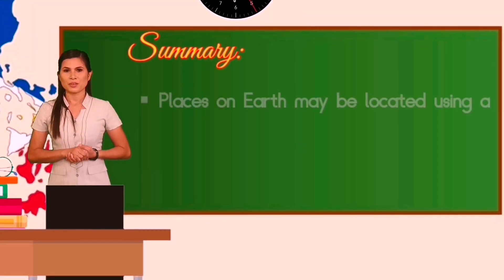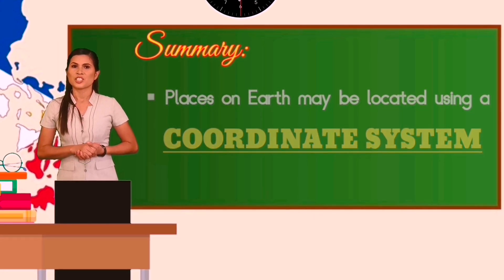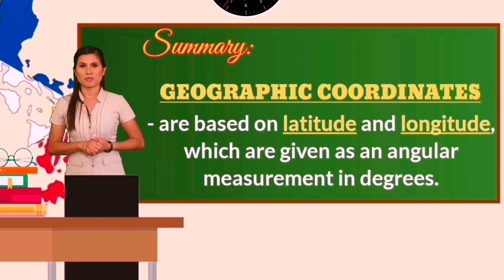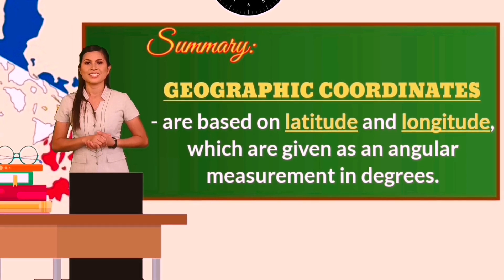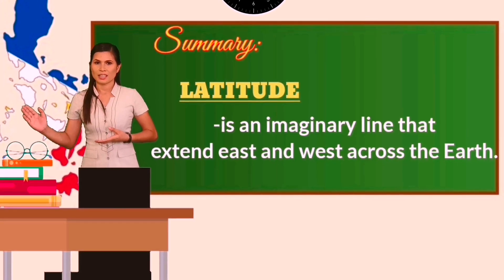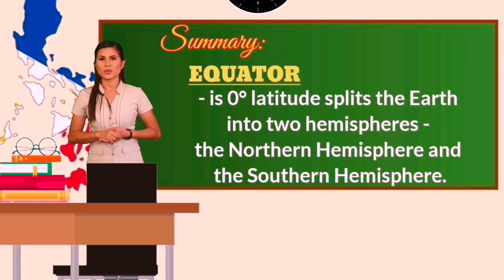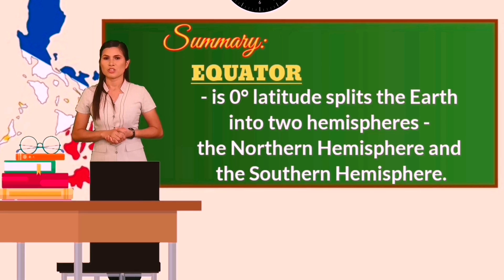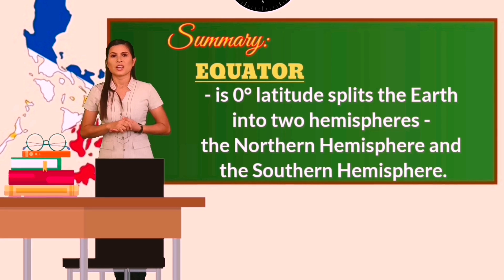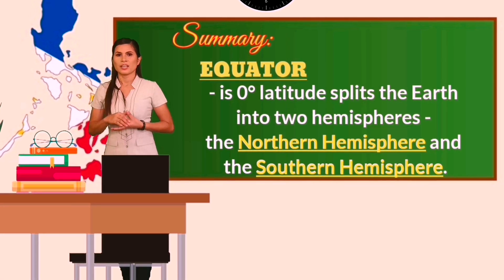To sum it up, places on Earth may be located using a coordinate system. Geographic coordinates are based on latitude and longitude, which are given as an angular measurement in degrees. Latitude is an imaginary line that extends east and west across the equator, which is 0 degree latitude, splitting into 2 hemispheres. Above the equator is the northern hemisphere, and below the equator is the southern hemisphere.